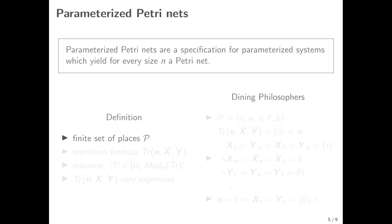Parameterized Petrinets are the specification means for our parameterized systems. The parameter we introduce is always the size of the Petrinet. For the Dining Philosophers, every philosopher has an index in the system — every philosopher has three states and the fork has two states. We use a finite set of places as the underlying mechanism, which is replicated for every index smaller than the size. In the case of the Dining Philosophers, these are the five states: thinking, waiting, and eating for the philosopher, and free and busy for the fork.